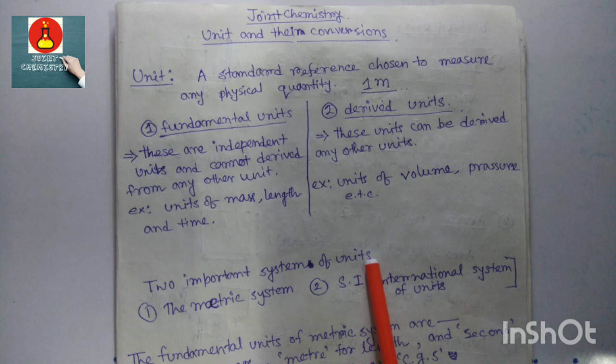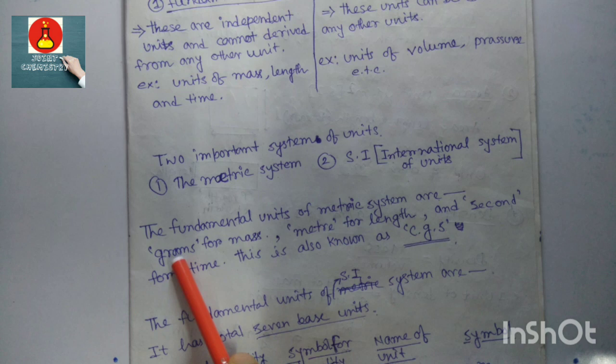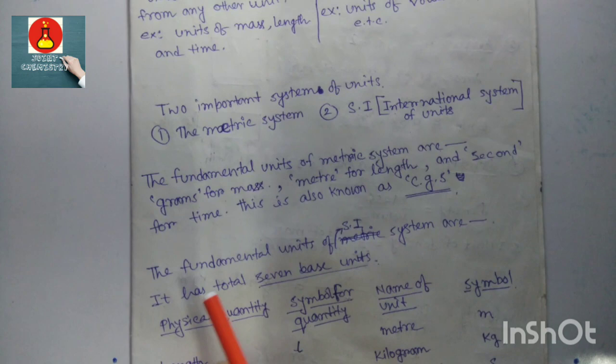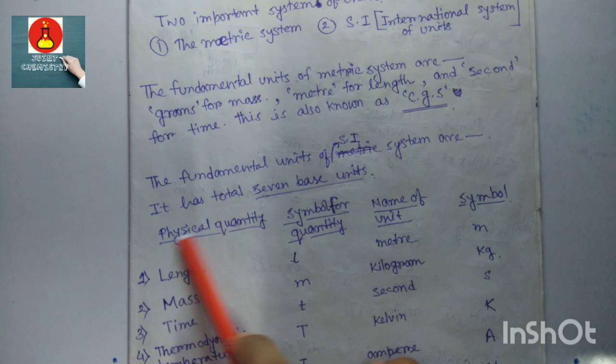There are two important systems of units: one is the metric system and the second is the SI system, or International System of Units. The fundamental units of the metric system are gram for mass, meter for length, and second for time. This is also known as the CGS — centimeter-gram-second — system.